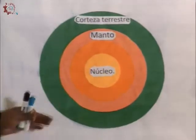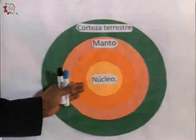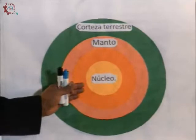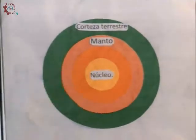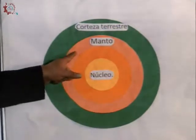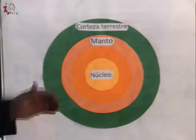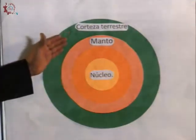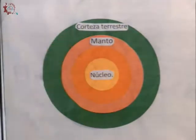Here I brought you a diagram. We have the nucleus, which is divided into two parts: the internal and the external. Then we have the mantle, which can also be divided into two parts. And then we have the surface, which is the surface of the Earth — the crust that surrounds the Earth.